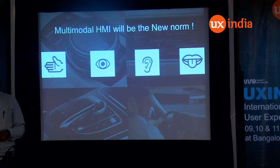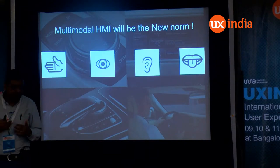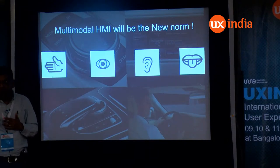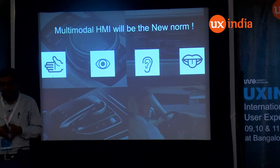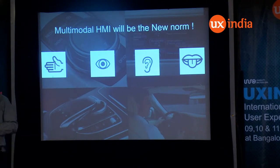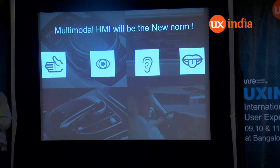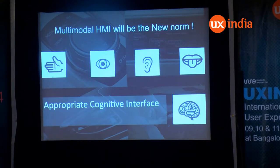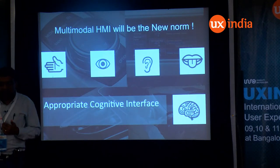Looking at everything one would do inside a car, what becomes very apparent is there is no single ideal way of interacting with the car. Any user experience built inside a car has to be multimodal — a combination of multiple interaction methods that best suit the given scenario. Essentially, you are providing appropriate cognitive tools and cognitive ways to interact with the system.